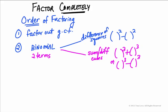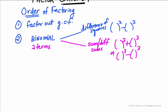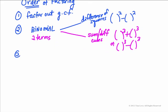The next part is, if it isn't two terms — if it's a trinomial, that is, if you're given a problem that has three terms — then you're going to use the tic-tac-toe, or the AC method.